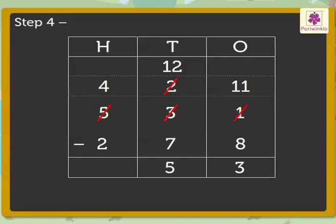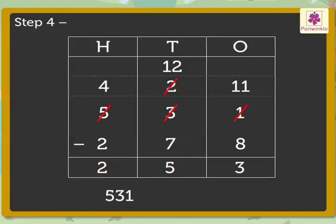Finally, subtract the hundreds: 4 minus 2 is equal to 2. Write 2 in the hundreds column. So 531 minus 278 is equal to 253.